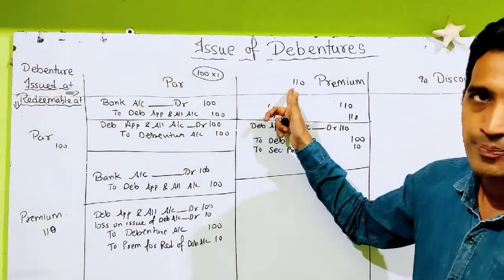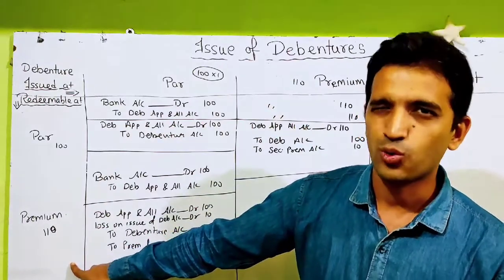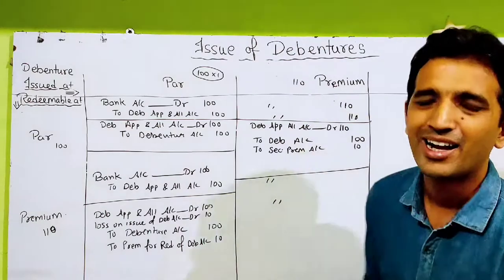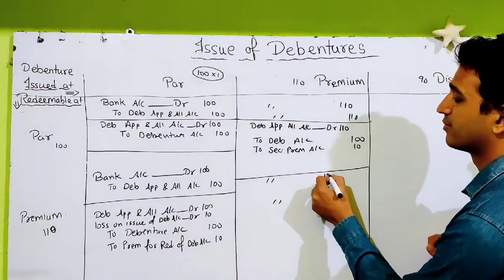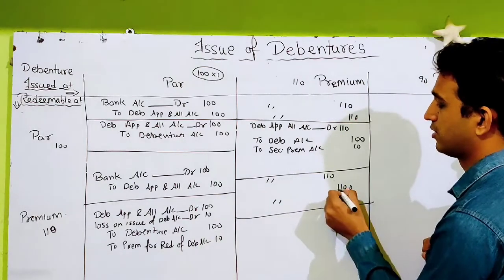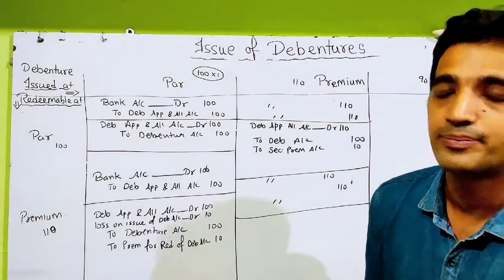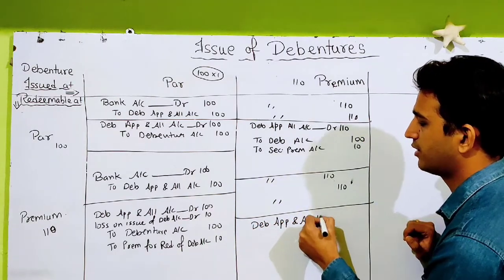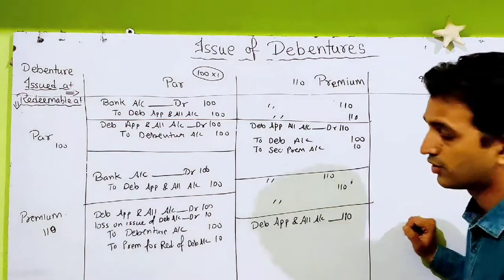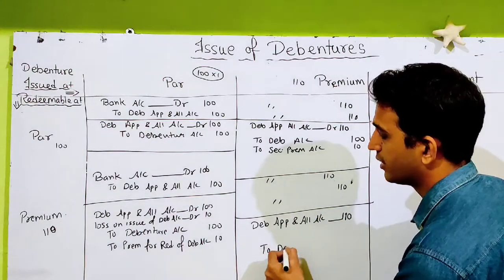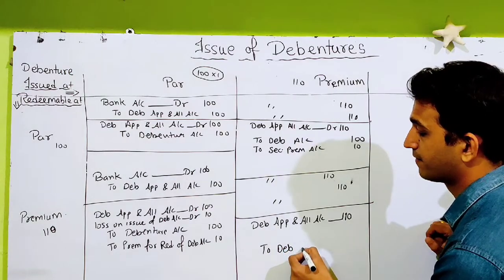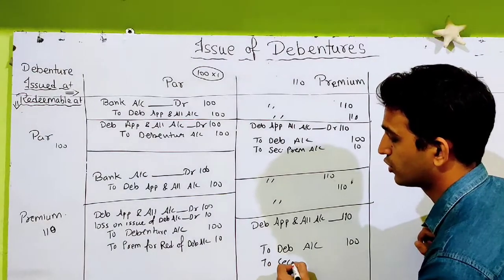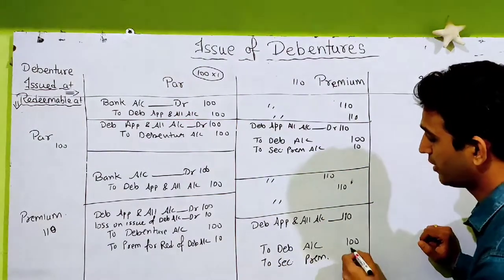Next — debenture issued at premium, redeemable at premium. Entry 1: Bank Account debit 110, to Debenture Application and Allotment Account 110. Entry 2: Debenture Application and Allotment Account debit 110, to Debenture Account 100, to Security Premium Account 10.